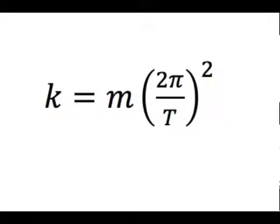If we want to experimentally determine the spring constant, all we need to do is measure the mass of the object on the spring and the period of oscillation.